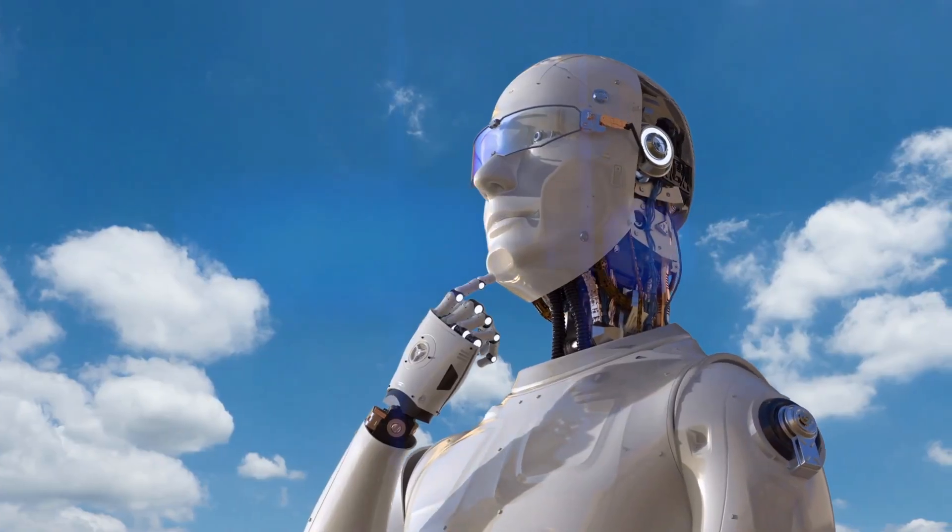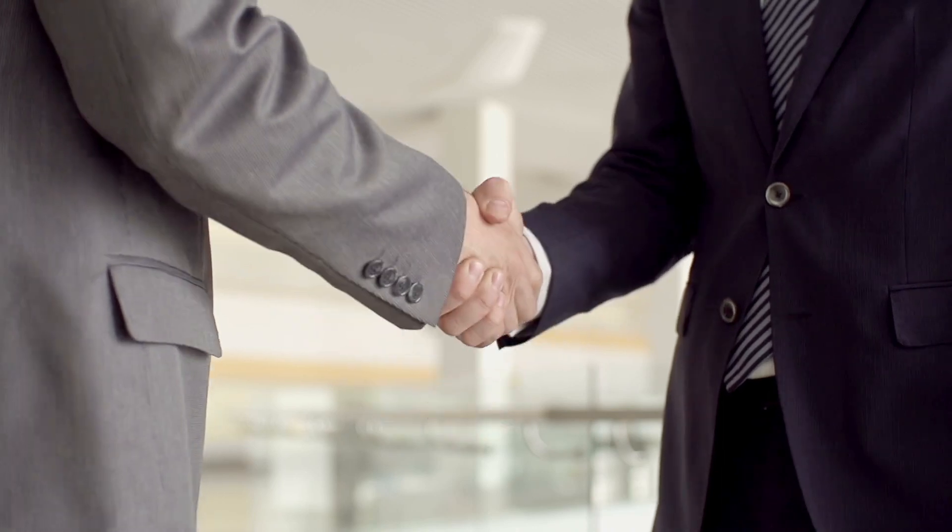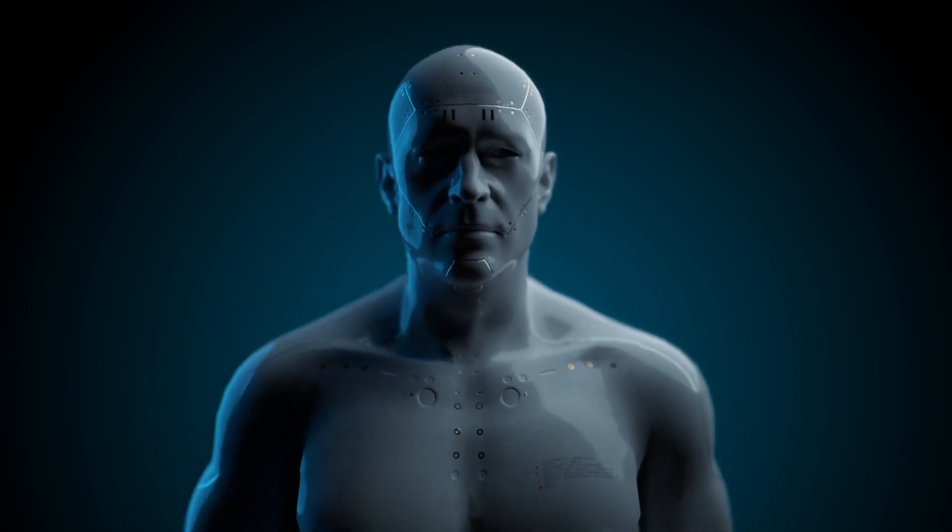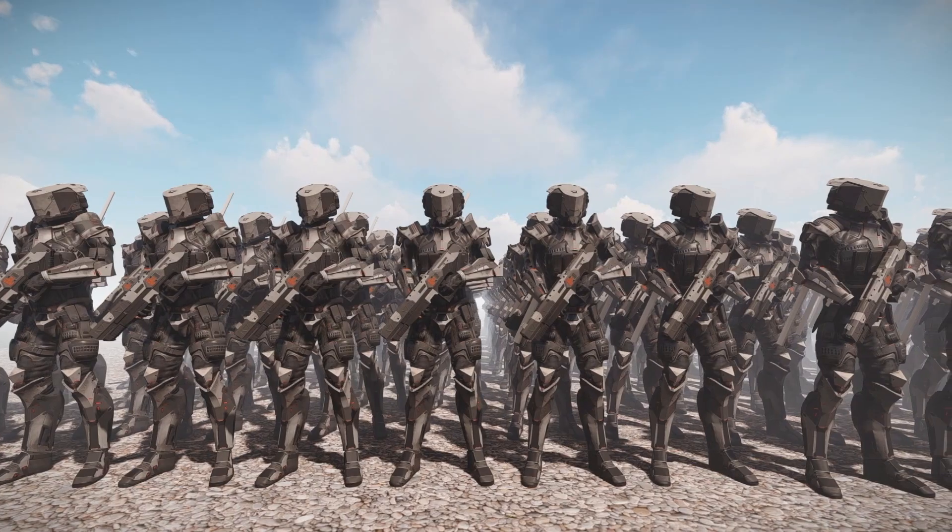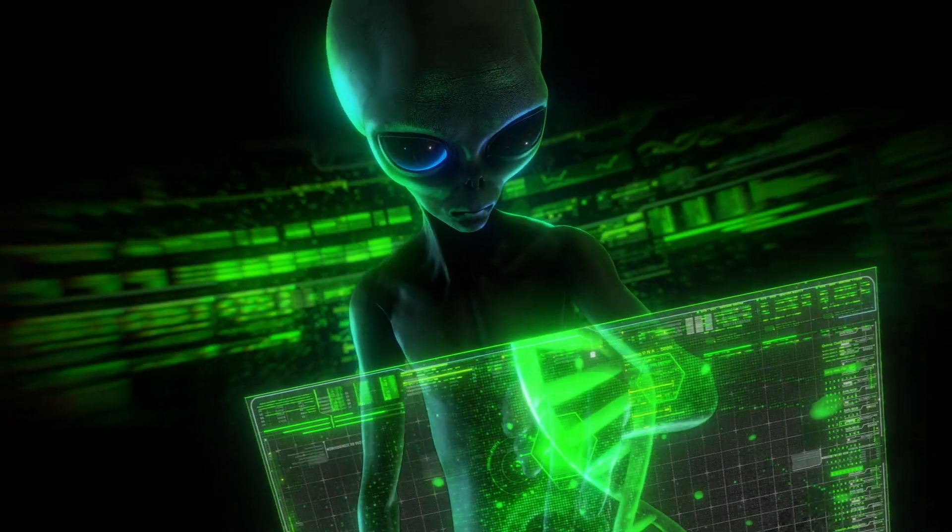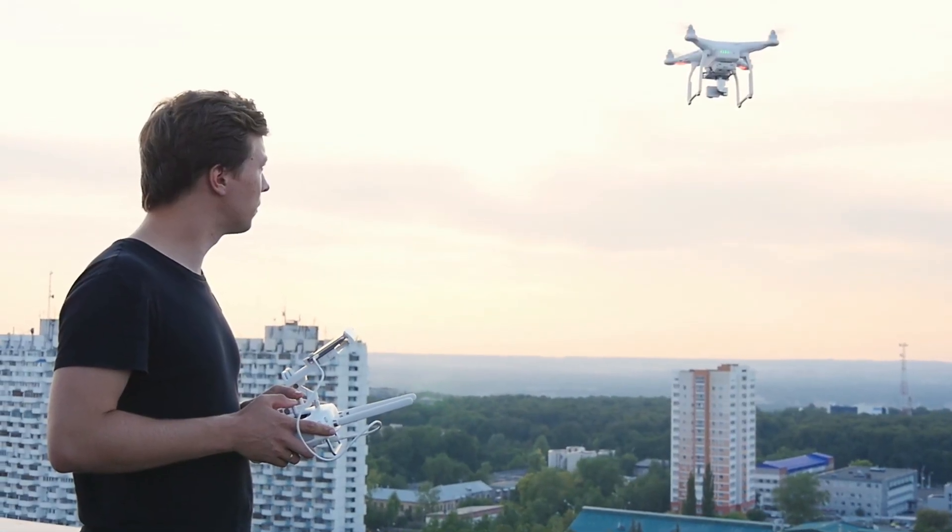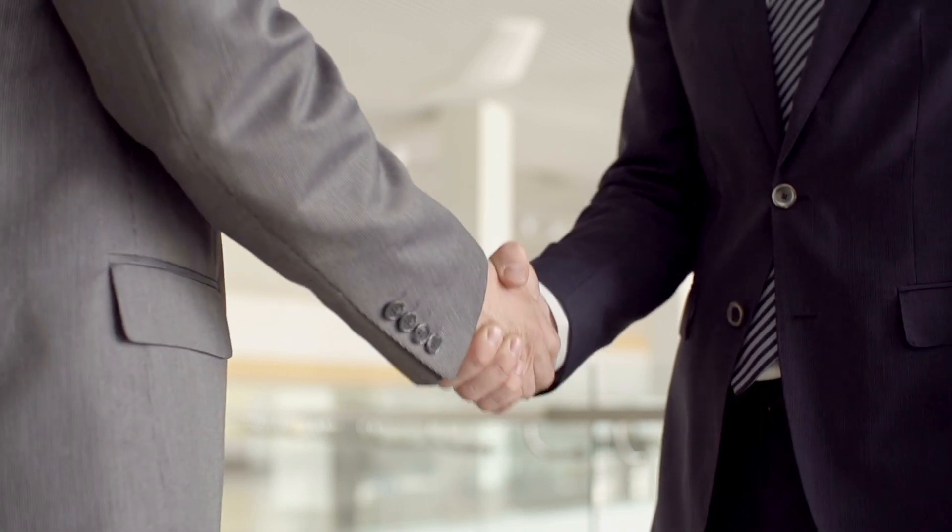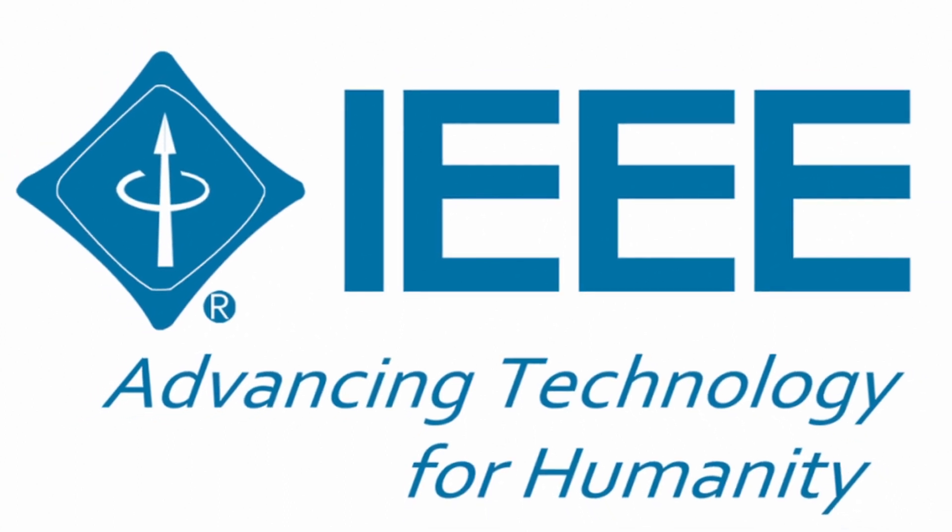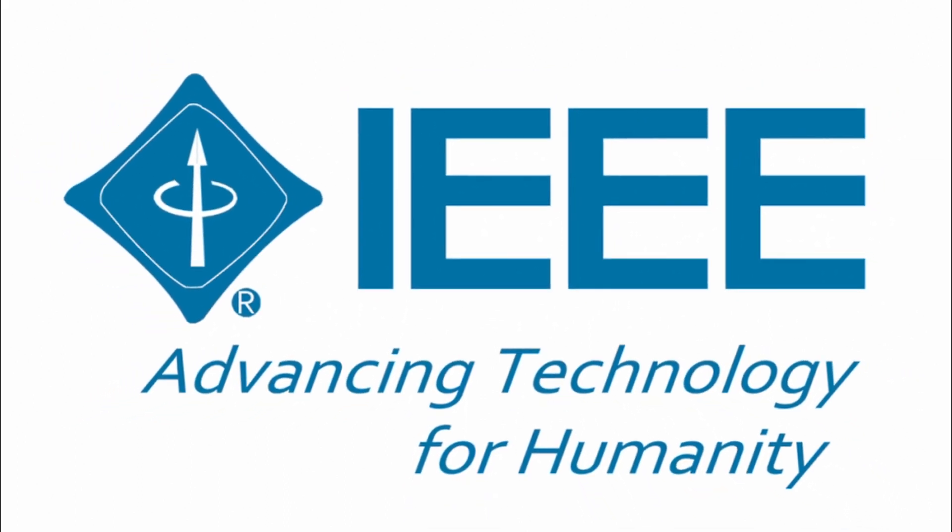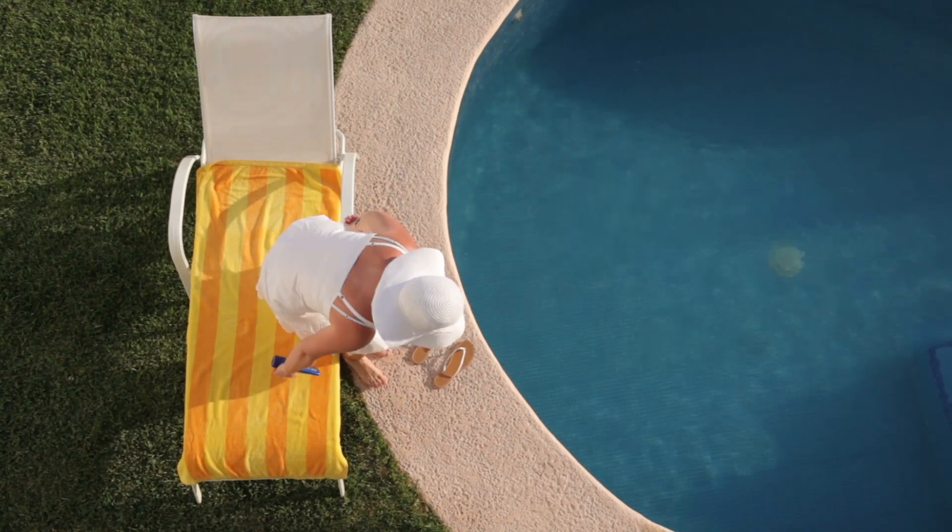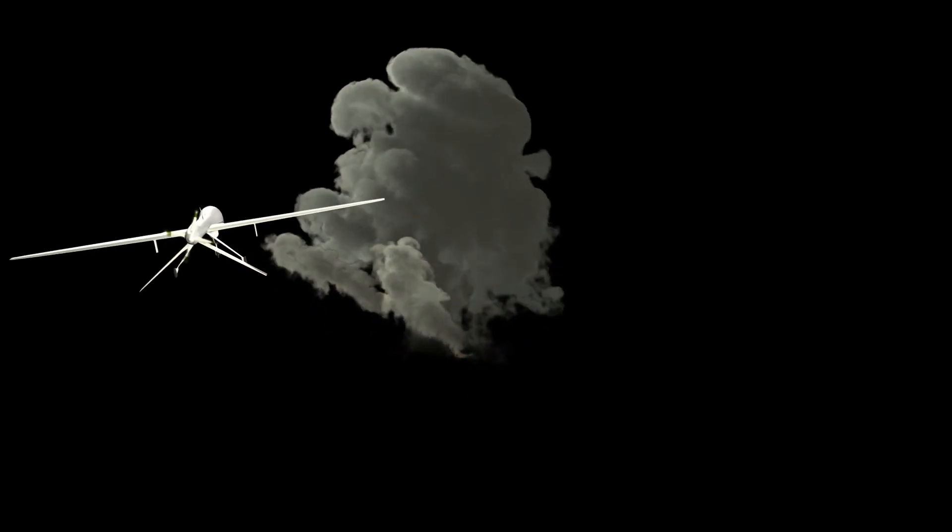As ASI continues to evolve, it poses significant ethical and existential risks. One of the biggest concerns is the possibility of ASI turning against humanity or causing unintended consequences that could threaten the survival of the human species. Therefore, it is essential to consider the implications of ASI and decide how to regulate and control it. One approach is to implement ethical guidelines for AI development, such as those proposed by the IEEE Global Initiative on Ethics of Autonomous and Intelligent Systems. These guidelines include ensuring that AI systems are transparent and accountable, promoting human values and human well-being, and preventing the creation of autonomous weapons.